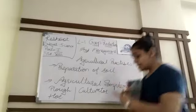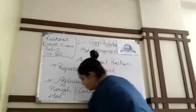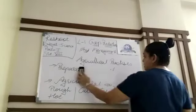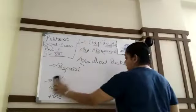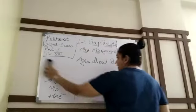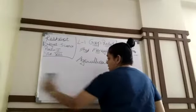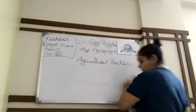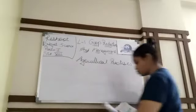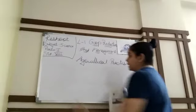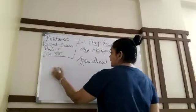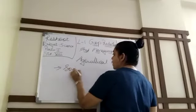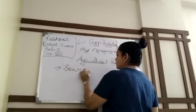The second step of agricultural practices is sowing. Sowing means seeds daalna hai — placing seeds in the ground so that crops grow. Zamine mein crop grow karne ke liye, ham jo seeds daalte hai, that is called sowing.